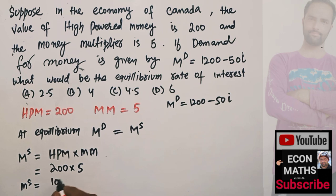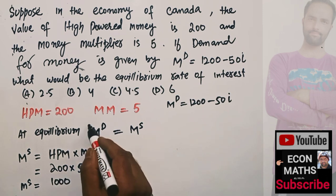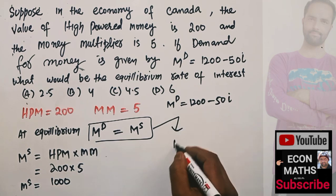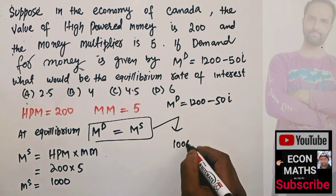At equilibrium, money demand equals money supply, so Ms = 1000.